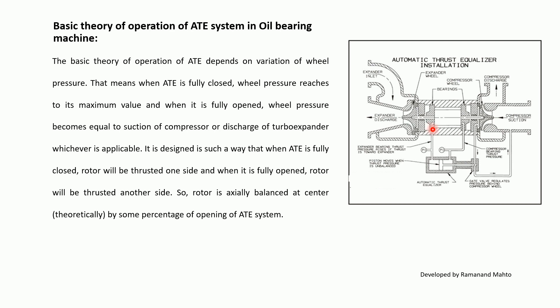The thrust bearing oil system is connected on the top side for the compressor. The wheel pressure is connected to the ATE valve through the suction of the compressor. The basic theory of operation of ATE depends on the variation of wheel pressure. When the ATE is fully closed, wheel pressure reaches its maximum value, and when it is fully open, wheel pressure becomes equal to the suction of the compressor or discharge of the turbo expander, whichever is applicable.